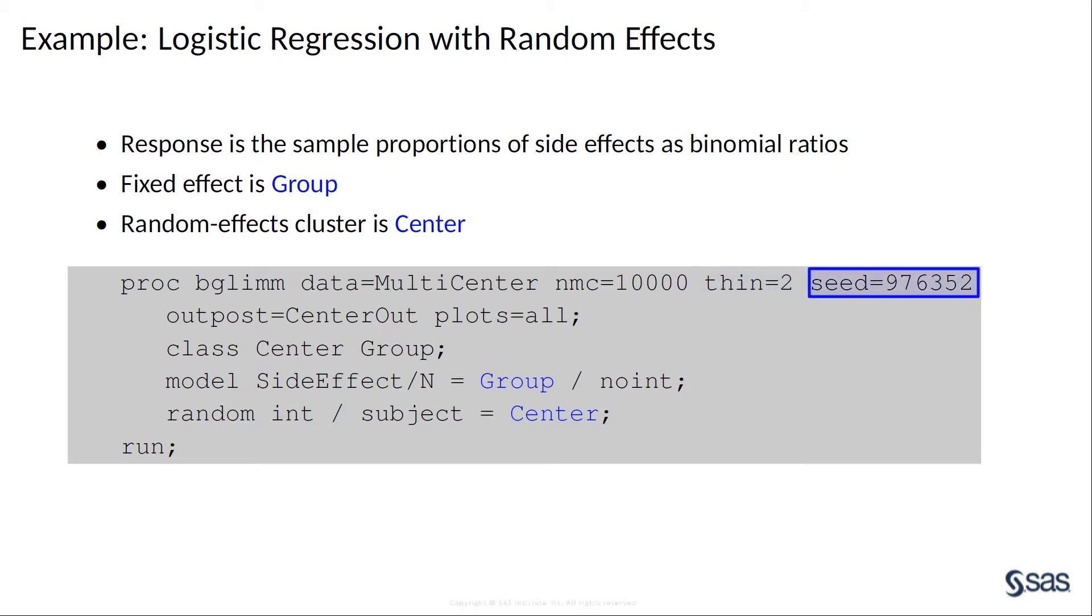The seed option specifies a seed for random number generation, which produces the same results for each run. The Outpost option names an output dataset to save the posterior samples. The model statement specifies the response variable as binomial ratios by using the events divided by trials syntax.